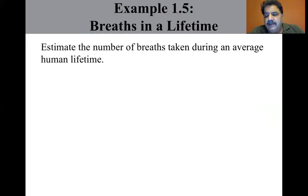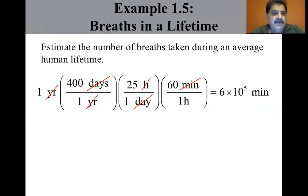So we find the approximate number of minutes in a year. Let's show the calculation. One year is approximately 400 days, 400 days in a year, 25 hours in a day, 60 minutes in an hour. I mean, I know it's 365, actually 365.25, but we're doing estimates here. So we're doing some rounding just to make it easier. We come up to six times 10 to the five minutes is the number of minutes in a year.